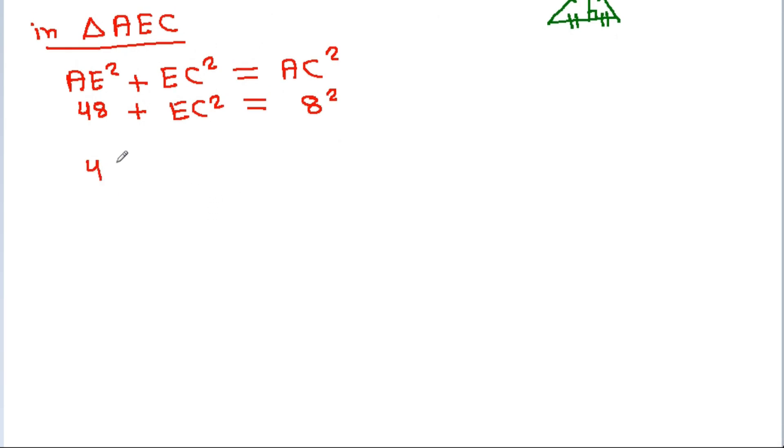And 48 plus EC squared will be 64 minus 48. And EC squared is equal to 16. So, EC will be 4.